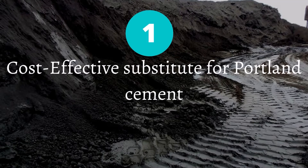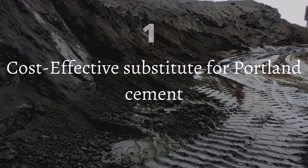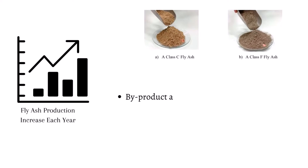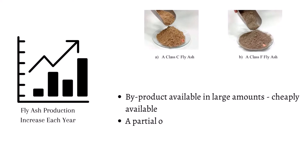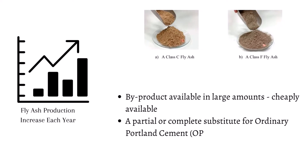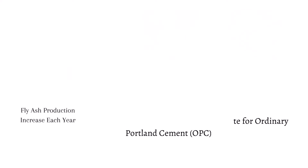Benefit 1: Fly ash is a cost-effective substitute for Portland cement. Fly ash itself is a waste product which is produced in a humongous amount around the world. It is classified as Class F and Class C fly ash. Both can be used as a partial or complete substitute for ordinary Portland cement based on the application. Hence, compared to the cost of OPC, the use of fly ash is a cost-effective option.